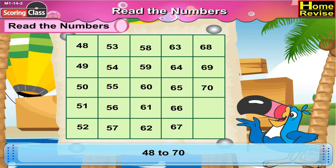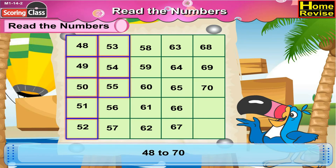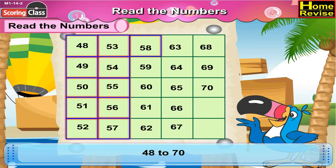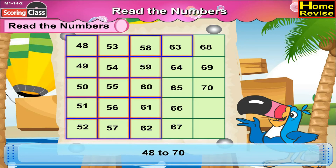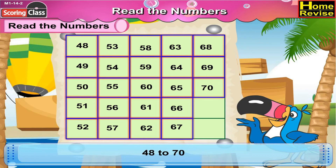Forty-eight to seventy. That would be forty-eight, forty-nine, fifty, fifty-one, fifty-two, fifty-three, fifty-four, fifty-five, fifty-six, fifty-seven, fifty-eight, fifty-nine, sixty-seven, sixty-eight, sixty-nine, seventy.